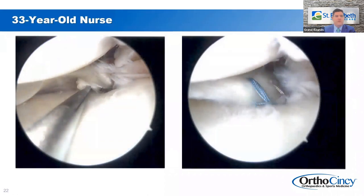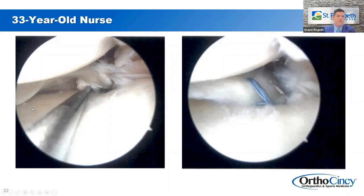This is a 33-year-old nurse with a complete avulsion of the medial meniscal root — maybe a couple small fascicles just hanging on, but really nothing attaching. Here we can see the luggage tag sutures in place with anatomic repair performed. She has minimal osteoarthritis, minimal fraying, just a little bit of maybe grade one softening of the cartilage — a really good candidate for repair.